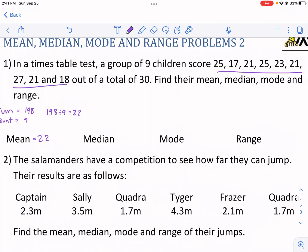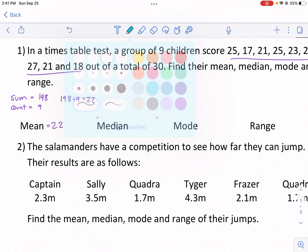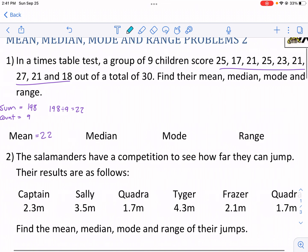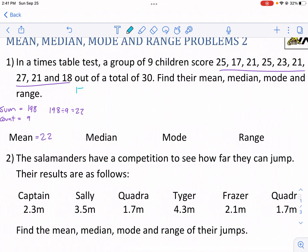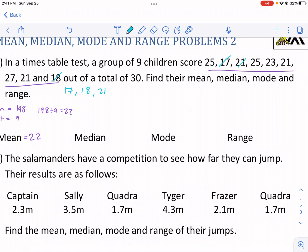Now the median. What we need to do for median is always put it in order. So I'm going to write out these numbers in order. 17, then 18, my next highest looks like 21. I have three of those. Next highest is 23, then 25, I have two 25s, and then 27 is my biggest number.